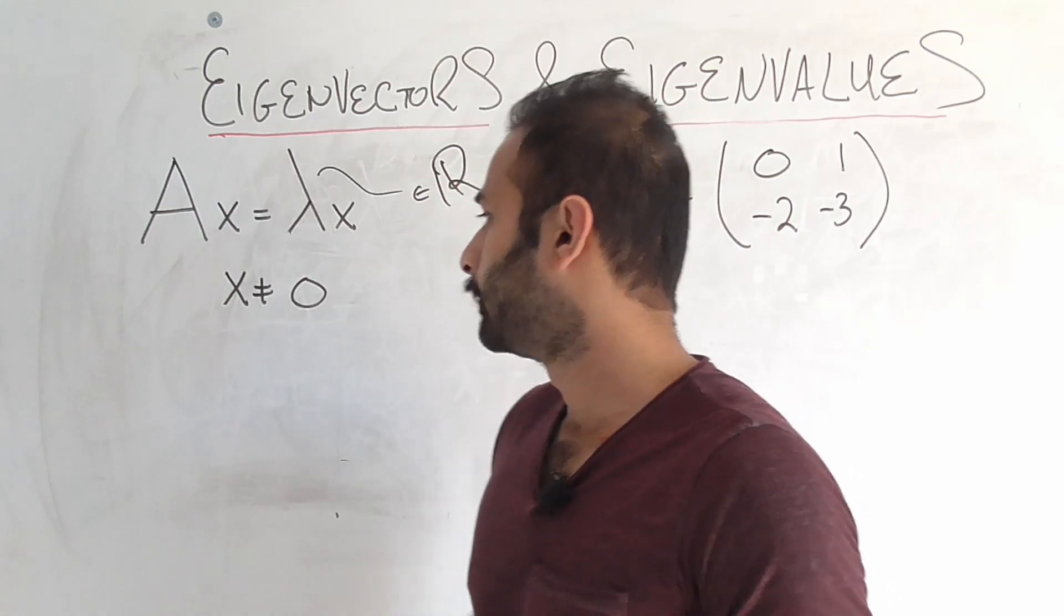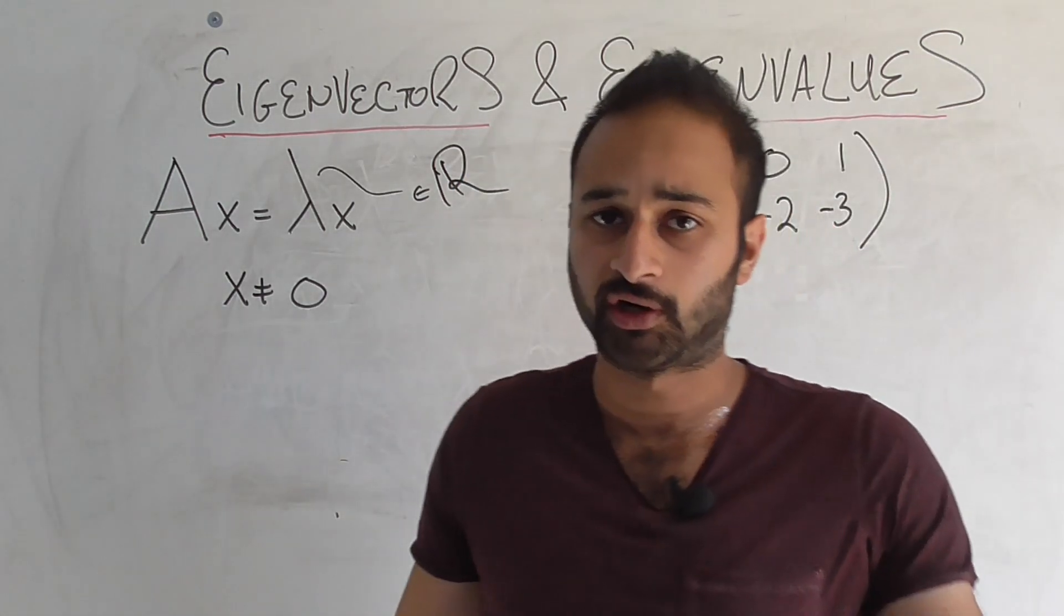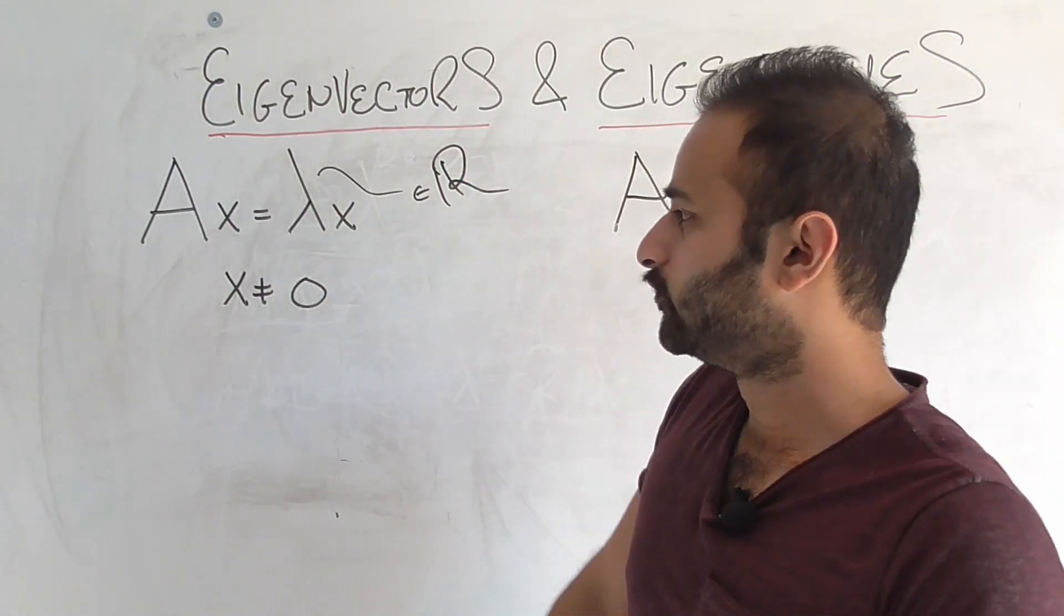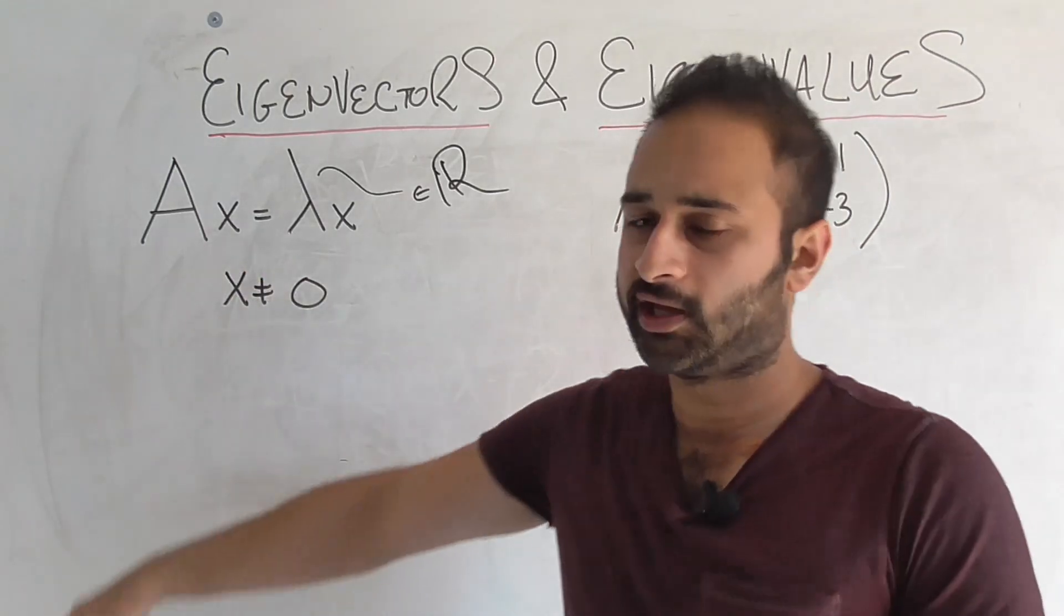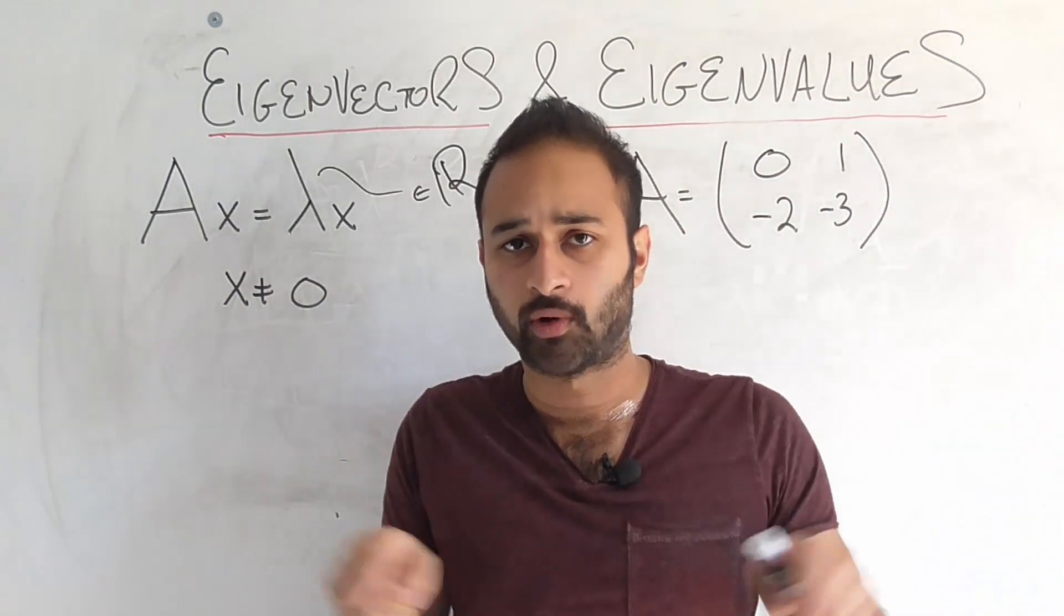But first things first, we're going to talk about what is the definition of an eigenvector and an eigenvalue. It's pretty simple. If you have any square matrix A, so A can be 2 by 2, 3 by 3, any square matrix,